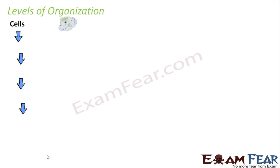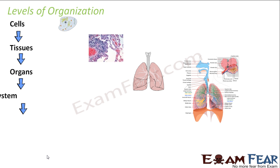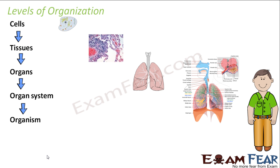We will quickly look at the level of organization. The first level is cells, then cells group together to form tissues. These tissues then form organs — for example, lung tissues form the lungs. The lungs, along with the pharynx, epiglottis, and other structures, form the respiratory system. Many such systems — digestive, circulatory, respiratory — together form the human being, that is the organism.